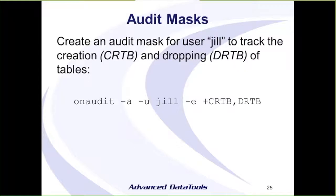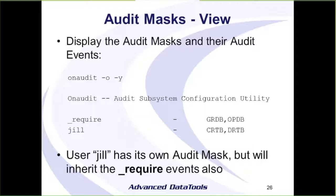Here we're creating another mask, this time for a specific user, Jill. Again, we use on-audit -A and specify the username. We're going to track create table and drop table. Because the require events are applied to everybody, Jill will not only track create table and drop table, but will also get the grant database access and open database events, because they're inherited from the require mask.